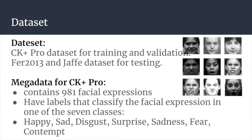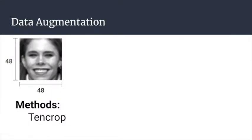Our CK Plus dataset contains 981 facial expressions labeled in one of seven classes: happy, sad, disgust, surprise, sadness, fear, and contempt. As we can see, we only have 981 facial expressions, so this is a relatively small dataset. Therefore, we have to do data augmentation.